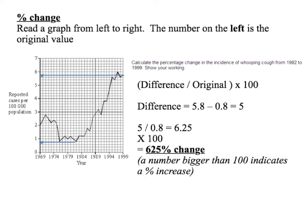It's difference divided by original times by 100. So we want to work out the percentage change between 1982 and 1999. Read up from 1982, read across — gives a value of 0.8. For 1999, read up, read across — gives a value of 5.8. The difference is 5.8 minus 0.8, which gives 5. Divide by the original value (0.8, the one most to the left on the graph): 5 divided by 0.8 is 6.25. Times by 100 is 625%.